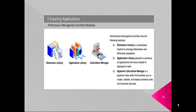Performance Management Architect has the following modules: Dimension Library, Application Library and Calculation Manager. Dimension Library is a centralized location to manage dimensions and dimension properties. Application Library presents a summary of applications that were created or deployed or both. Calculation Manager is a graphical rules editor that enables you to create, validate and deploy business rules and business rule sets.